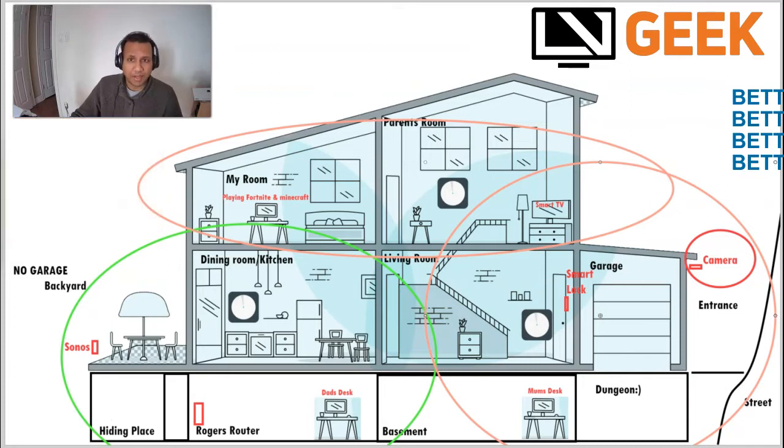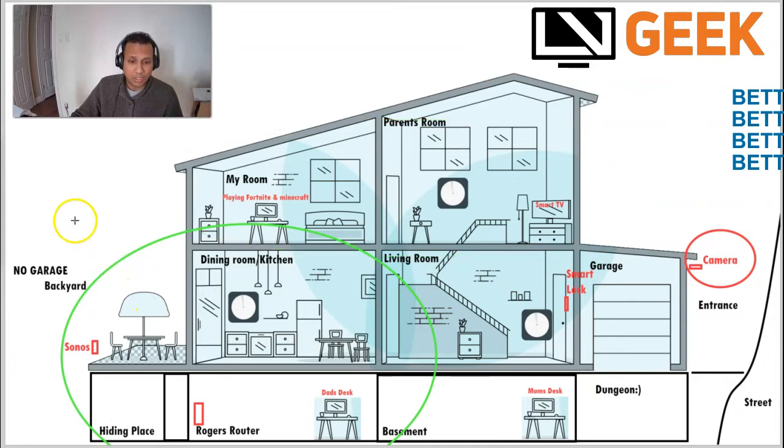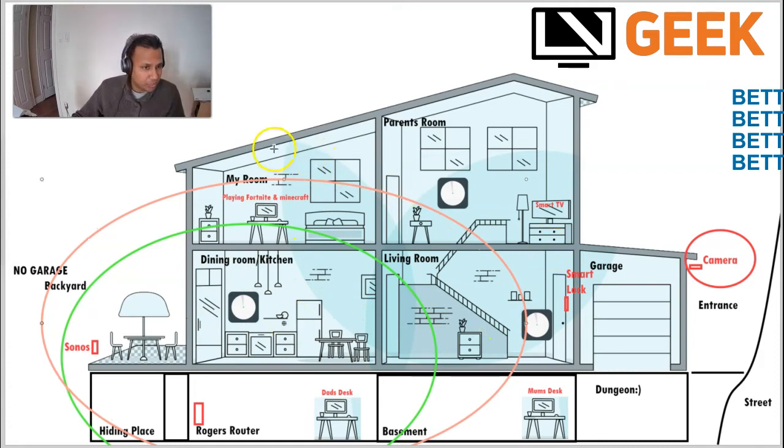So in the market you can find huge routers which have big antennas. Do they work? No. So what happens with those antennas is it just enlarges the signal strength a bit bigger this way than what you get from Rogers or Bell, but it's not going to reach to all these locations and there's still going to be problems.